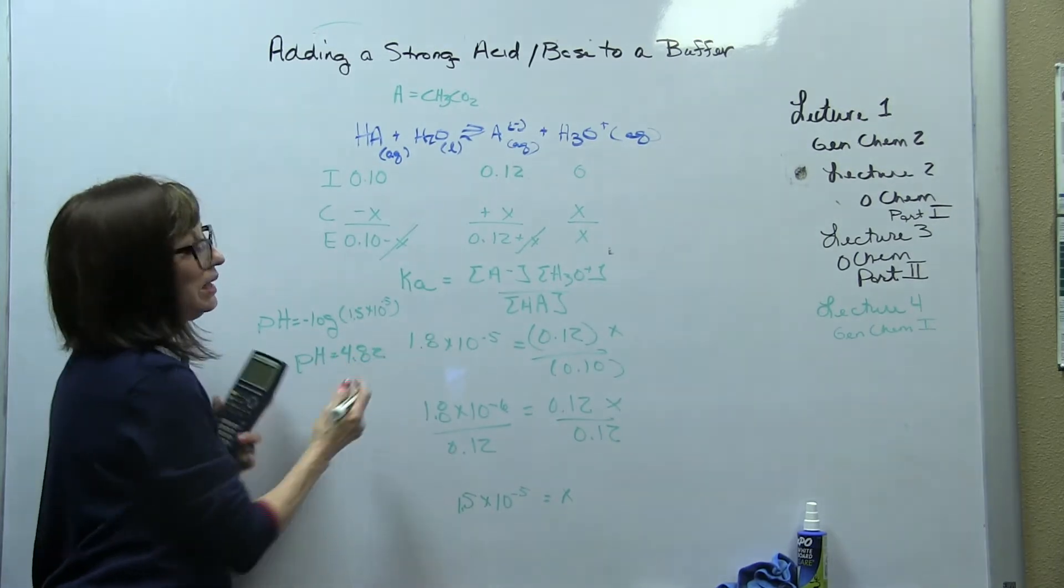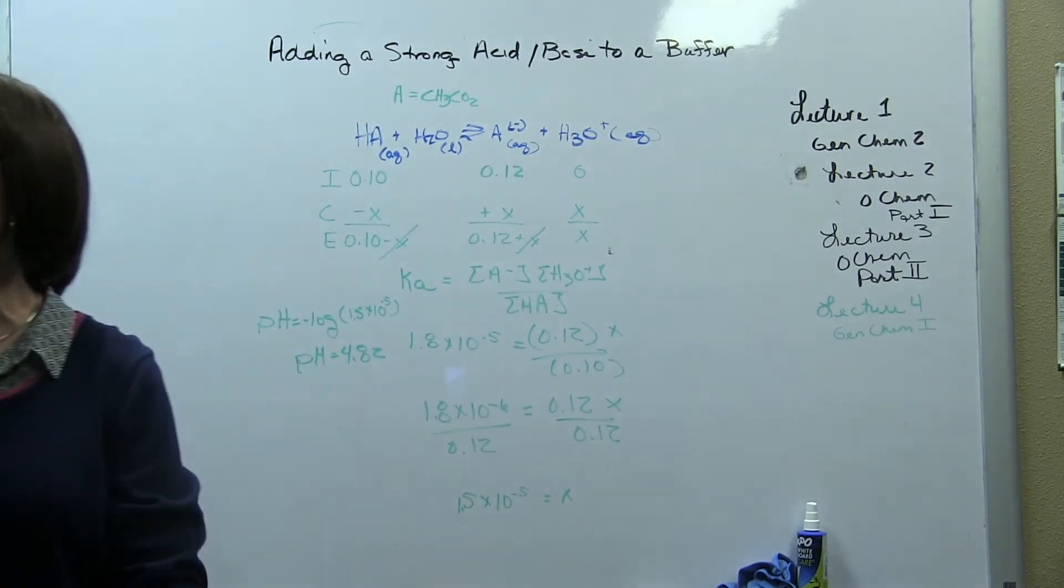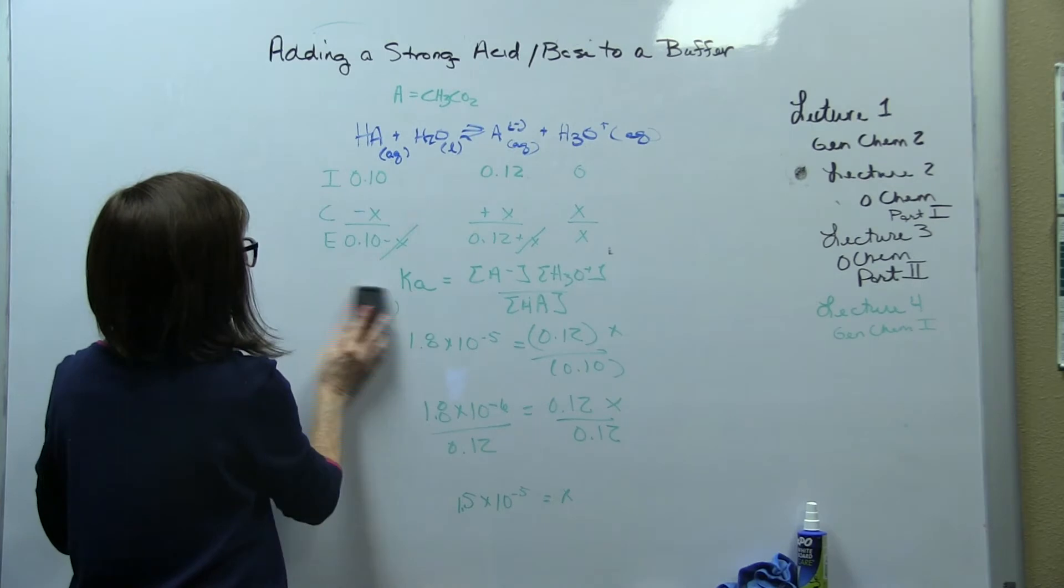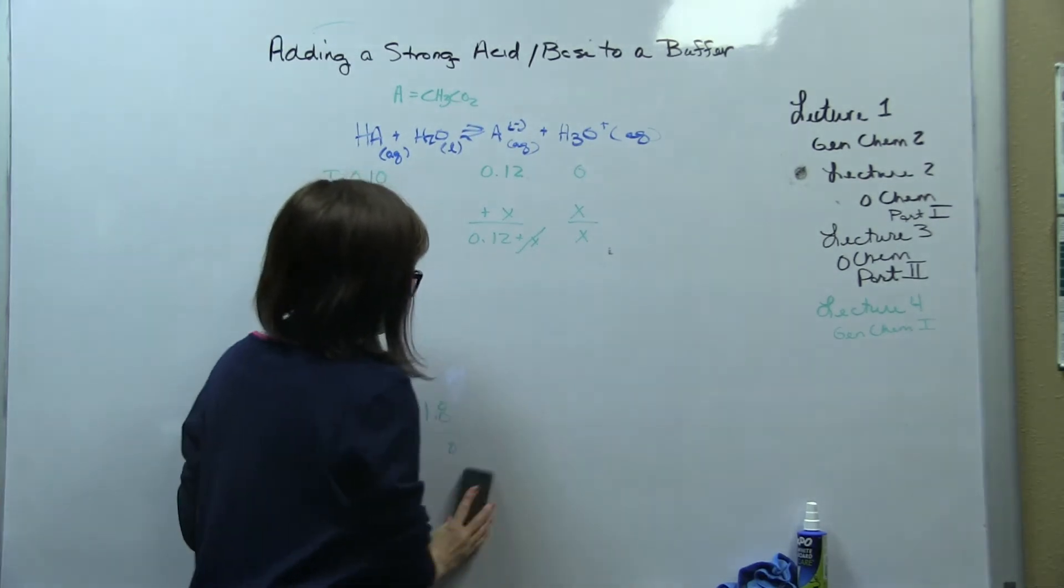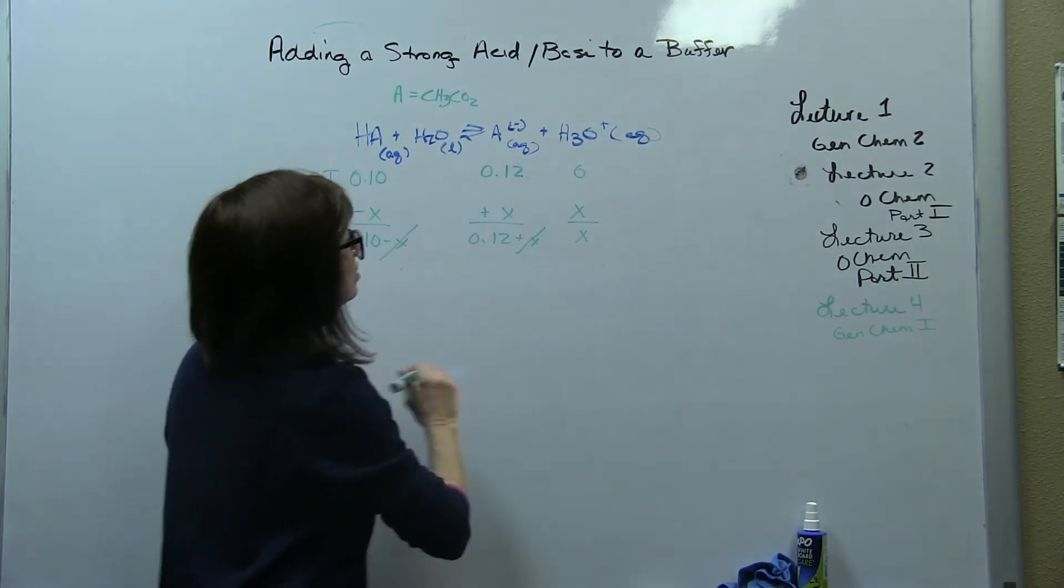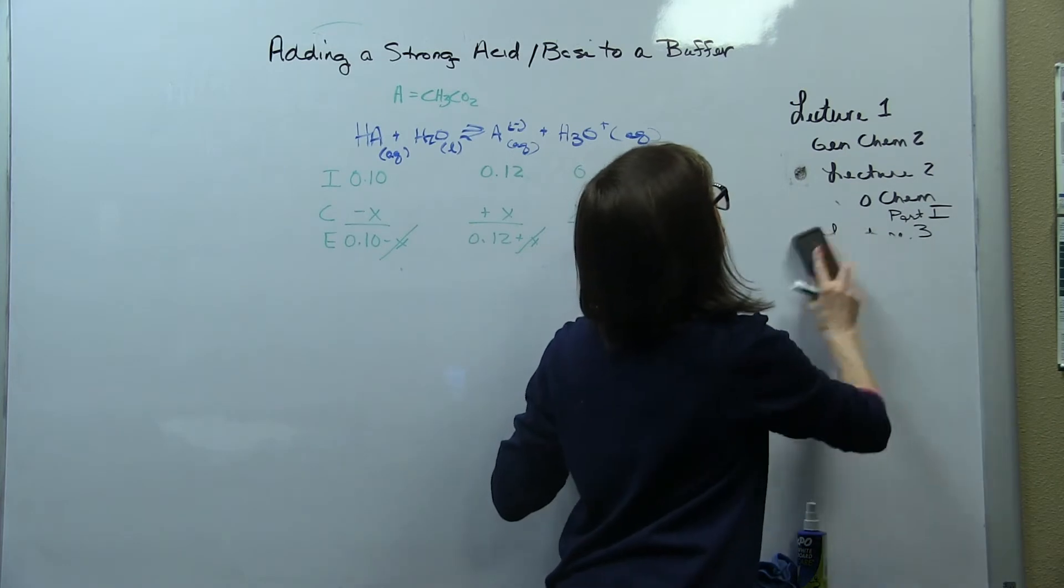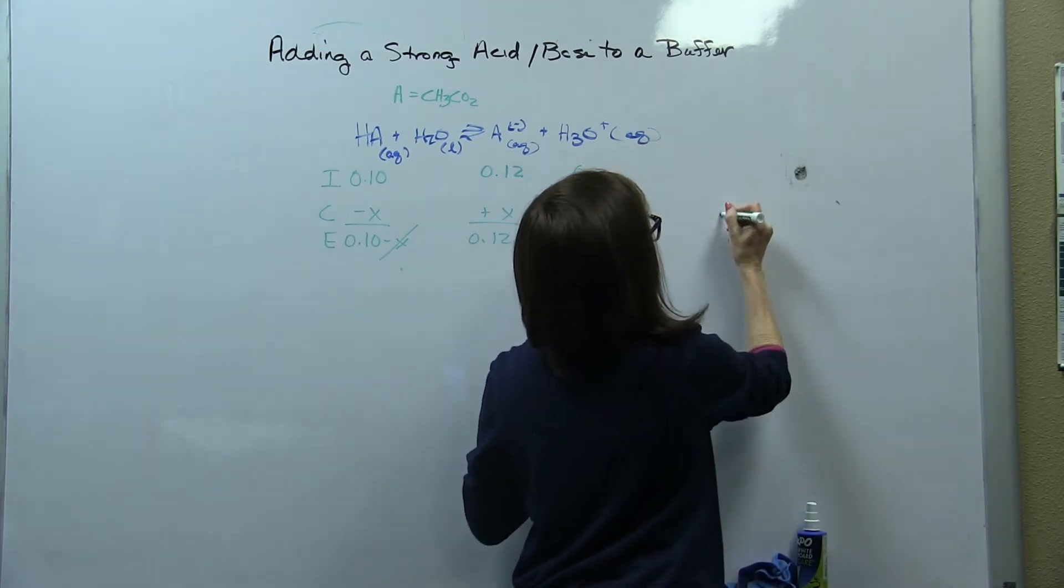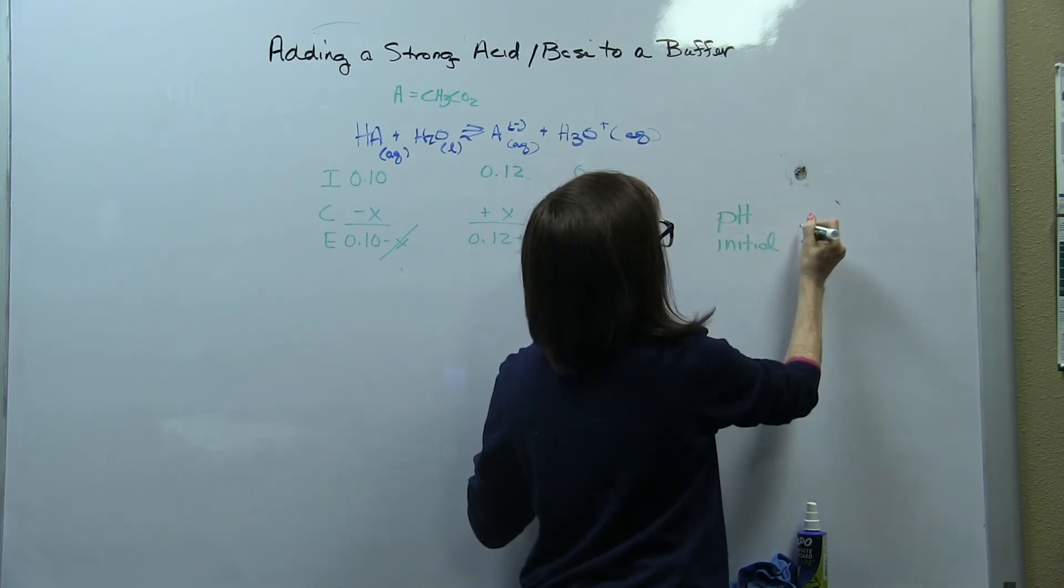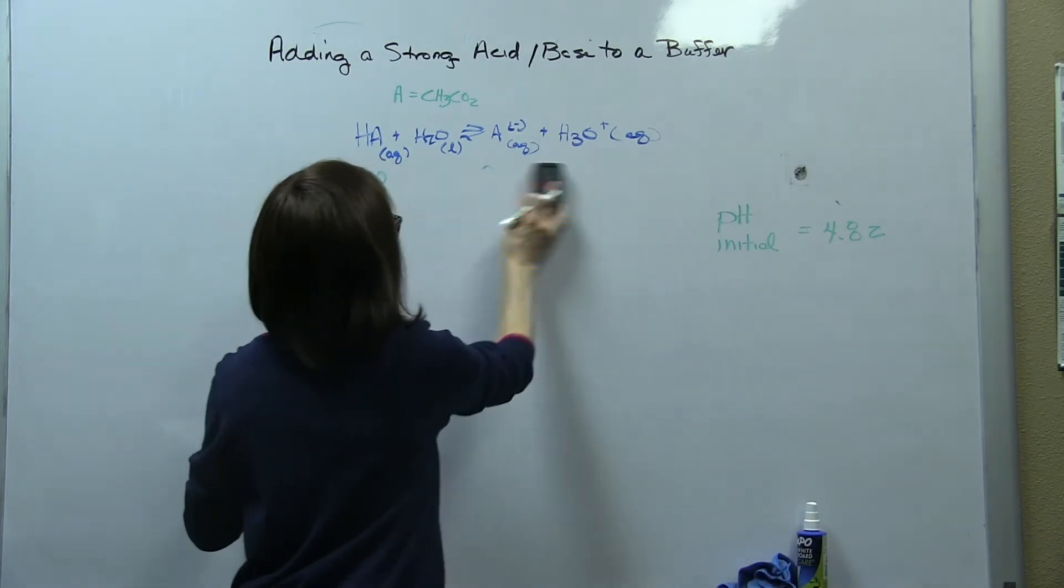I give 4.82 for the pH. So let's see what happens when we add strong acid or strong base. So let's keep that in the back of our mind. 4.82 for the pH without. pH initial is equal to 4.82. At least that's what I got.